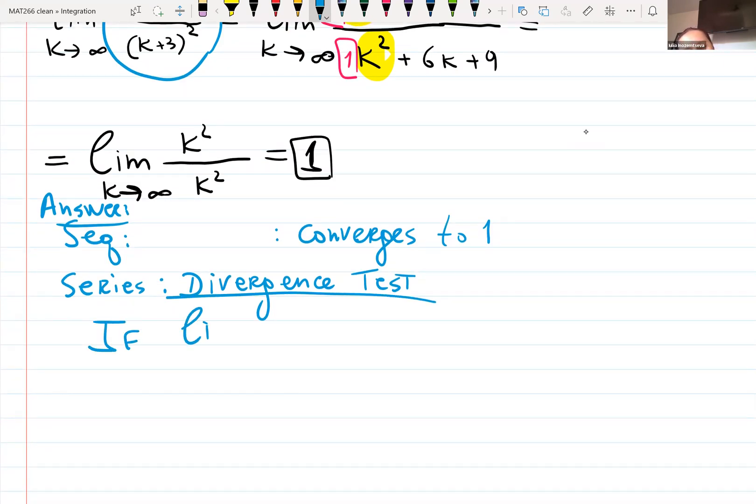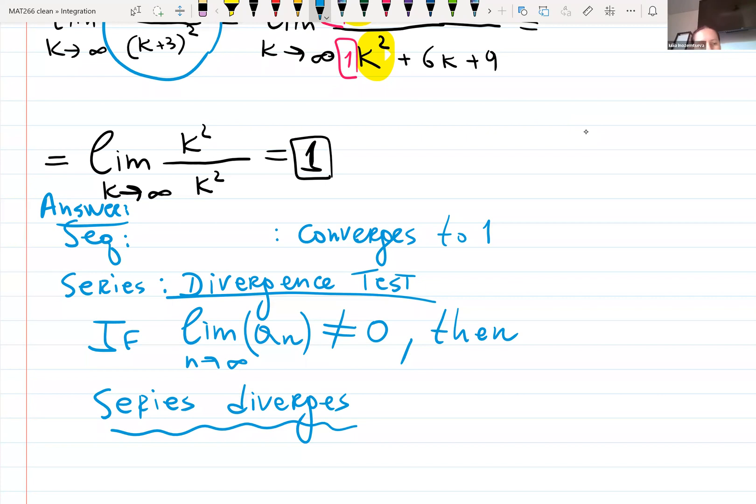Which says, if limit of a_n, when n goes to infinity, I call them tails because it's like the answer of the series, do not give you zero, then for sure, the series diverges or blows up. Diverges. So the answer for series, it will be divergence.